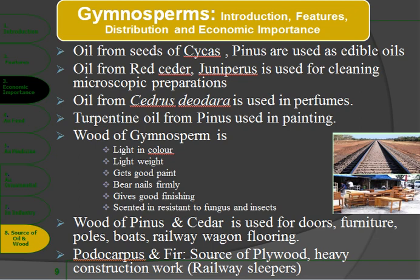Wood of pines and cedar is used for doors, furniture, poles, boards, railway wagons and flooring. Podocarpus and firs are sources of plywood, used for light-weight construction including windows. For heavy construction, they are used as railway sleepers — Podocarpus and firs are commonly used for this purpose.